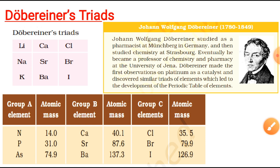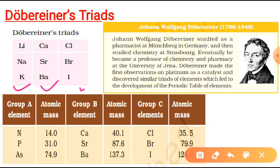We have seen that Dobereiner made triads, and we saw what the three triads are — triad 1, triad 2, and triad 3. The significance of this classification is great: it has value in predicting the atomic mass and properties of the middle element. Even today, these elements resemble each other in their properties and are members of the same group.